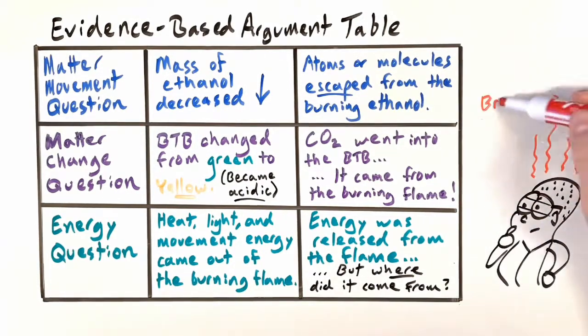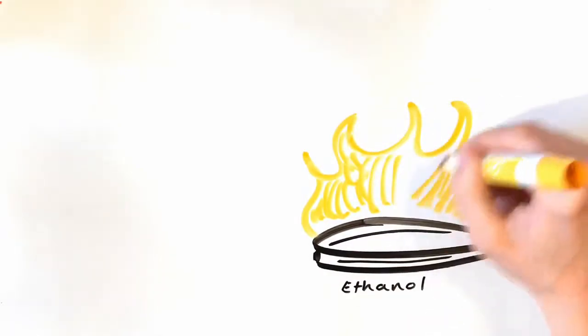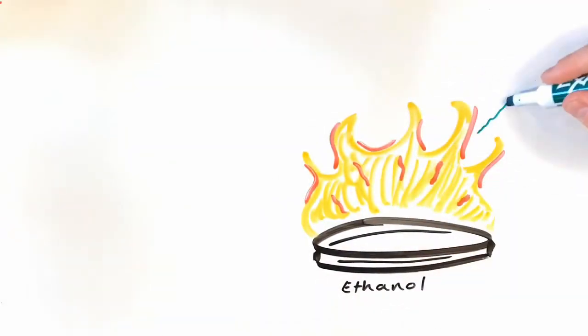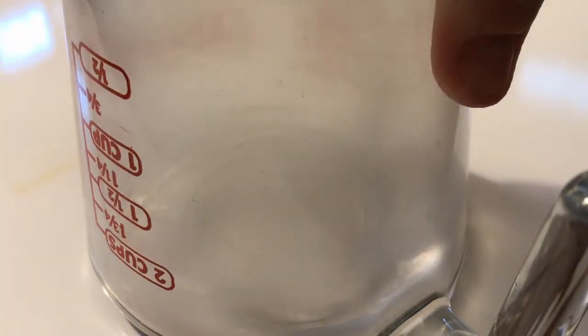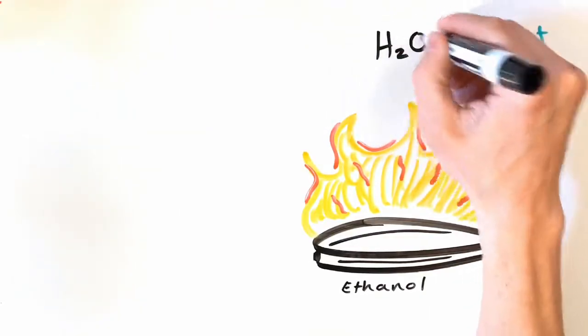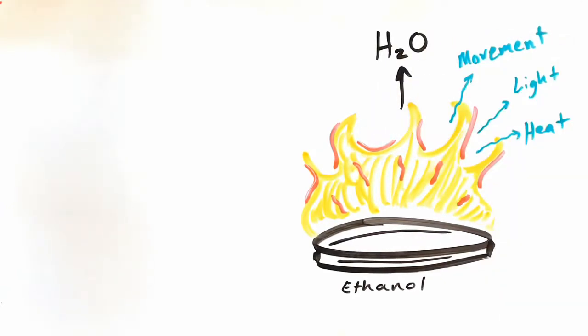Our last task in this video is to try to get everything we've observed and learned into a model. Here's the flame for burning ethanol. Let's model all that energy coming out of the flame. The next thing we observed was that cutting off the air killed the flame and that water appeared as condensation on the inside of the beaker. That means our model has to include water coming out of the flame and oxygen coming in.